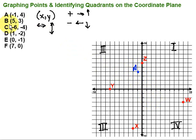Next: 5, 3. Since 5 is positive and we go left or right first, we go 1, 2, 3, 4, 5 to the right. And then we go up 3: 1, 2, 3. That's our point B.